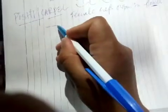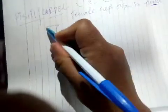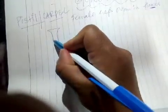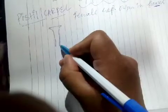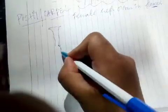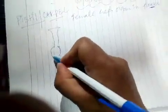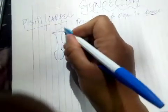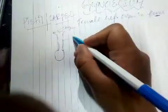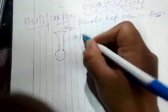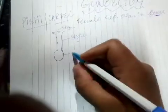When we see a detailed structure of pistil or carpel, we can see it is composed of stigma at the top, a long tubular structure which is called as the style, and at the base a swollen structure which is called as the ovary. So the swollen part is called as the ovary.